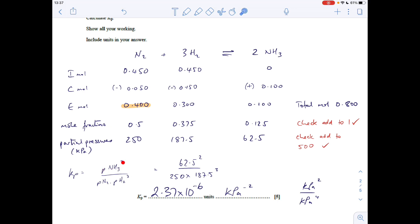Then we write the Kp expression: partial pressure of ammonia squared divided by partial pressure of nitrogen times partial pressure of hydrogen cubed. Put your numbers in and out pops the answer: 2.37 × 10⁻⁶. The units: you've got kilopascals squared on top and kilopascals to the power of 4 on the bottom. They cancel down to 1 over kilopascals squared, so it's kPa⁻².